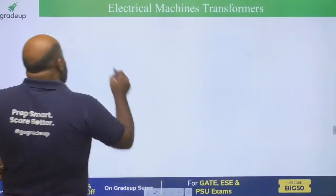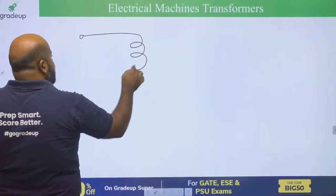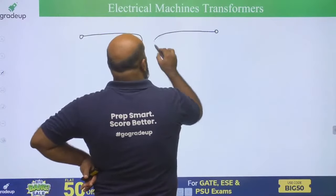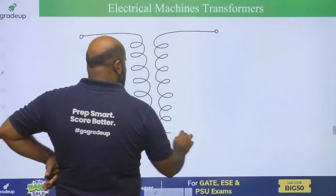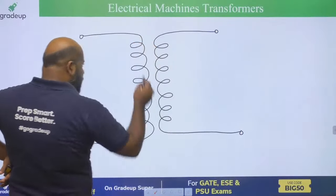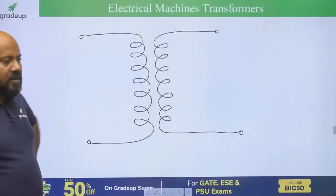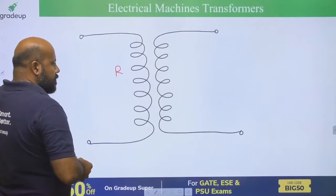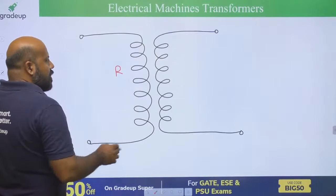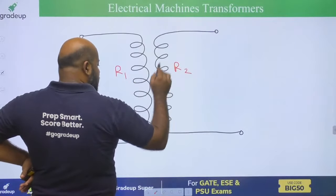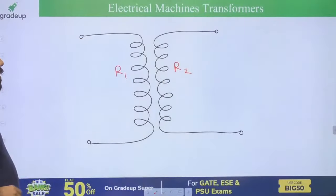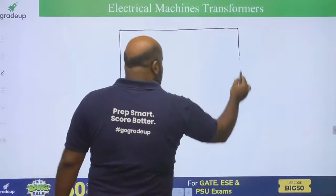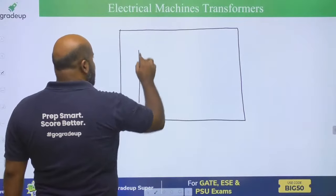Let us talk about the equivalent circuit of the transformer. Your transformer has two windings — and this is a practical transformer, meaning each winding is going to have some resistance. Now if you see what is happening with your transformer, you will better understand how you draw the equivalent circuit.